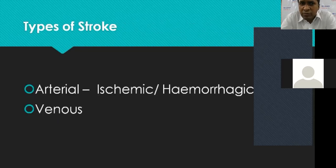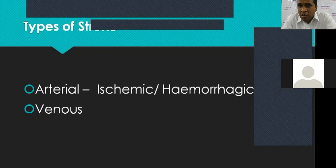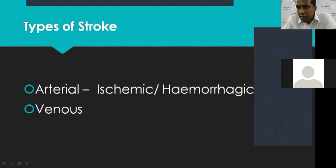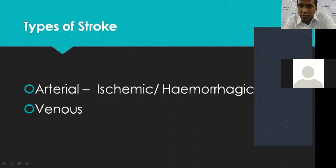When we look at the types of stroke, it is simple: there are arterial strokes and venous strokes. Arterial stroke is subclassified as ischemic — caused by a blockage in the blood vessel, seen in 85% of individuals — and hemorrhagic, caused by a brain hemorrhage. Hemorrhagic stroke is further subclassified as subarachnoid hemorrhage, where bleeding occurs around the brain, or intracerebral hemorrhage, where bleeding is inside the brain. Hypertension is a major cause of intracerebral hemorrhage.